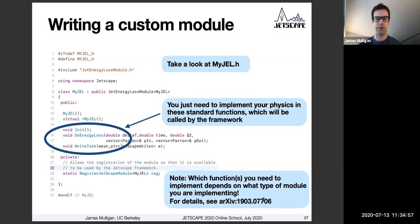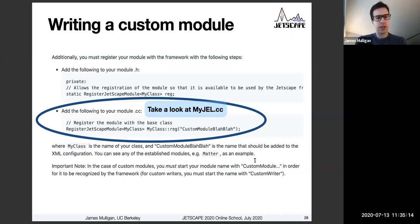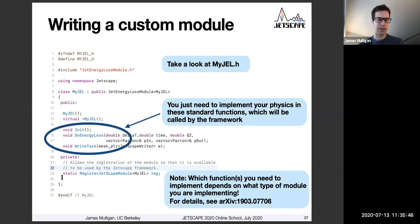Details of this are written in the manual. If you're trying to implement something else and it's not working, please get in contact with us and we can clarify that. There are a couple of steps in general that one needs to do to write a custom module, and this is documented reasonably well on the GitHub as well. In order for your module to get recognized by the framework, there are a couple of lines of code you need to add. In the header file, there is a line — static registered Jetscape module — that basically allows the Jetscape framework to automatically detect that your module is a real module to be run.